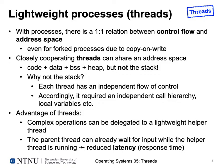With traditional UNIX processes there's a one-to-one relation between a control flow and an address space. A traditional process has one program counter running through a single-threaded program. This is true even for forked processes — a forked process has its own control flow and essentially its own address space, even when using copy-on-write, which is just an optimization creating the illusion of separate address spaces.